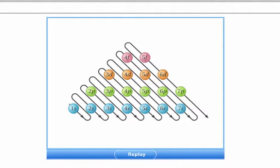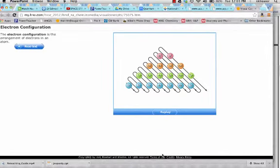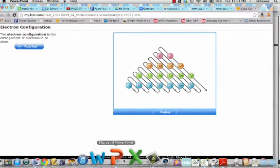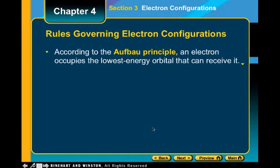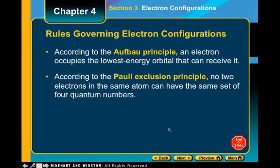There are a couple of rules we have to follow. The Aufbau principle states that electrons occupy the lowest energy level that is able to receive them. If there's a lower energy level available, the electron will always fill that first. You always fill from the lowest energy level to the highest energy level. I'll also show you how to use the periodic table as a cheat sheet, but you can use whichever method works best for you.